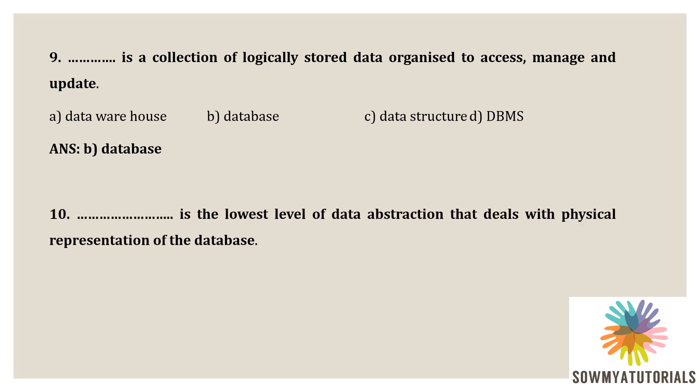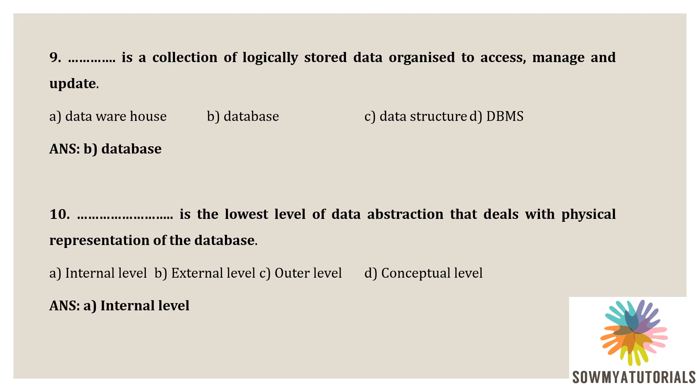Next question: dash is the lowest level of data abstraction that deals with the physical representation of the database. Options are A) internal level, B) external level, C) outer level, D) conceptual level. The correct answer is A — internal level. In three-tier architecture, the internal level is the lowest level of data abstraction, also known as the physical level. It describes how data is physically stored and organized on the storage medium.